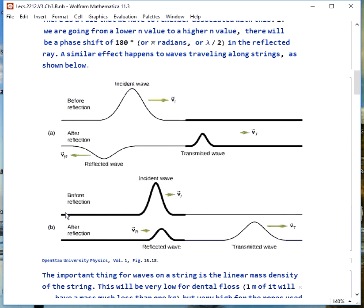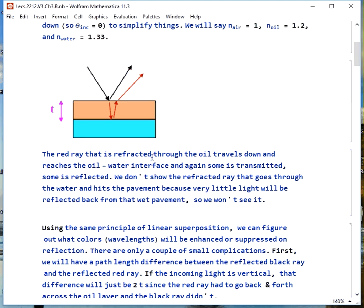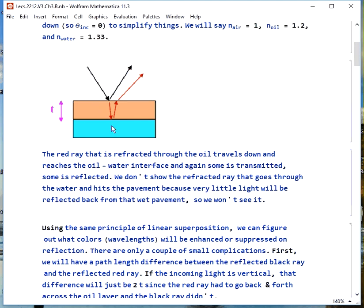On the other hand, if we're snapping the heavy rope that's connected to the dental floss, whatever little reflection there is there will not be inverted. This is just a way to keep in mind that the same thing is happening here when we go from low n to high n we get that phase shift.